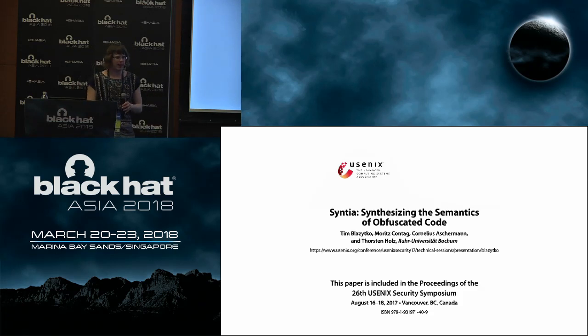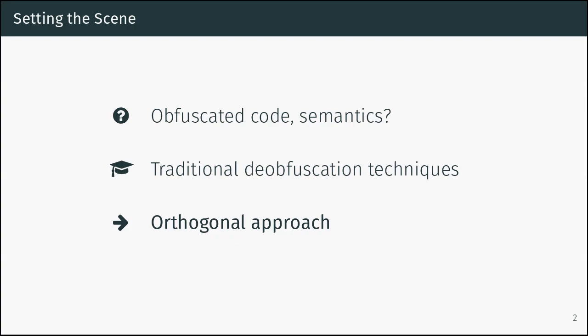We will discuss three different things. First, obfuscated code and its relation to semantic behavior. Then we will have a look at traditional code obfuscation techniques. And finally, we will have a look at a semantic-based orthogonal approach, namely program synthesis.